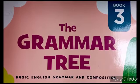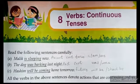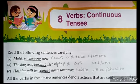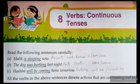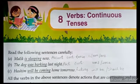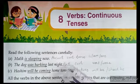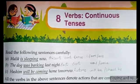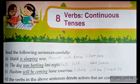Assalamu alaikum, class. Here is your book, The Grammar Tree. Let's open your books to Chapter 8: Verbs — Continuous Tenses. In this chapter we have discussed continuous tenses: present continuous tense, past continuous tense, and future continuous tense. Today we are going to solve Exercise C on page 31.